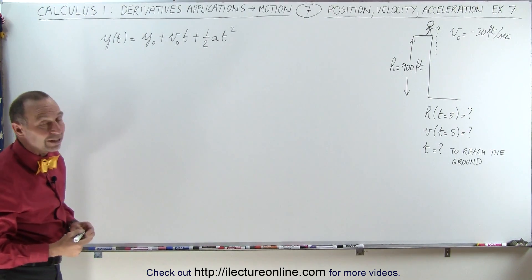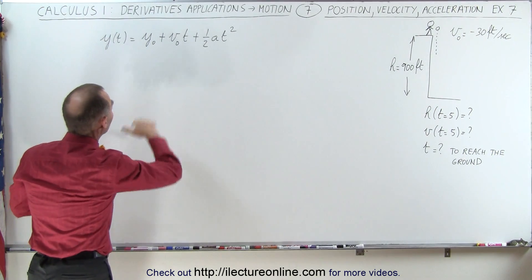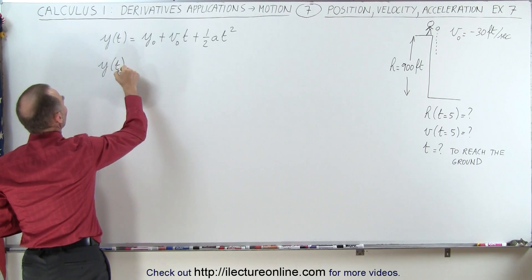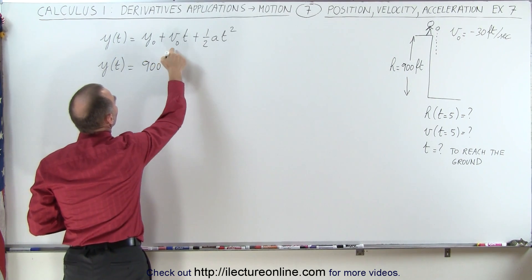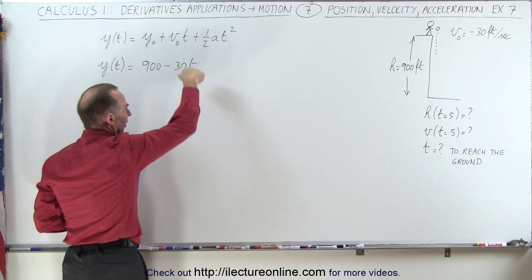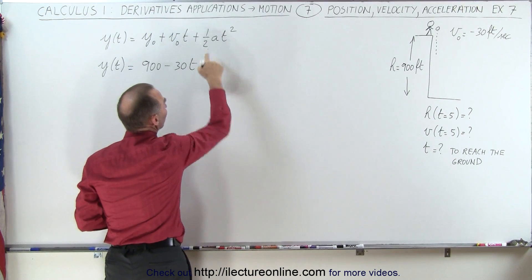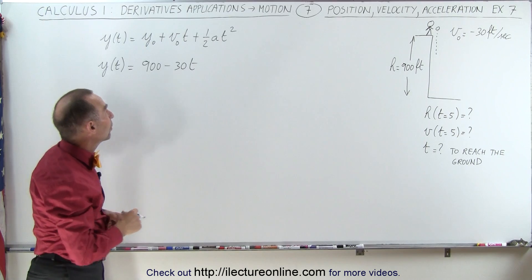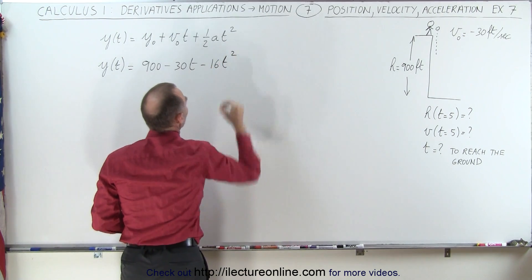We have units in feet, so we'll use feet in this equation. When we plug in the known values, the position as a function of time equals the initial height of 900 feet, plus the initial velocity minus 30 times t, and the acceleration is minus 32 feet per second squared, so dividing by 2 gives minus 16t squared.